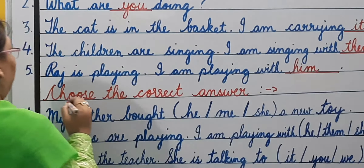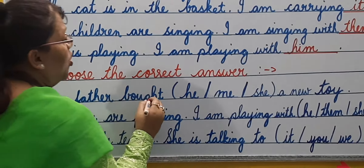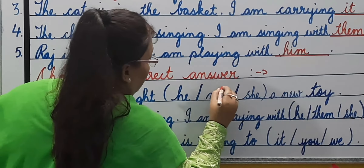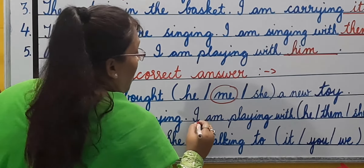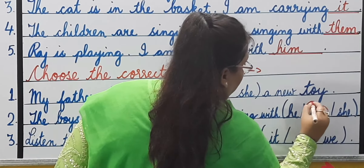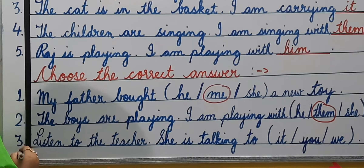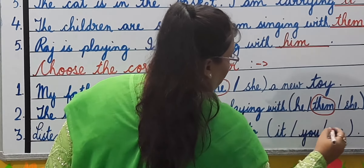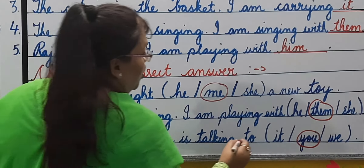The last exercise for today is choose the correct answer. Number one: My father bought — he, me, or she — a new toy. My father bought me a new toy. Number two: The boys are playing. I am playing with — he, she, or them? I am playing with them. Number three: Listen to the teacher. She is talking to — it, you, or we? She is talking to you.